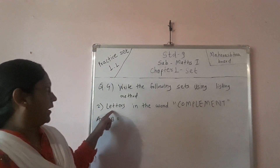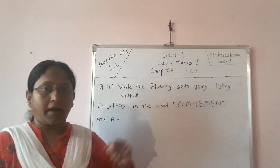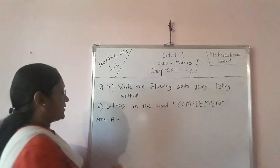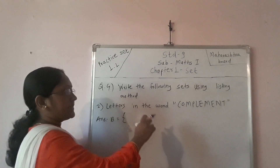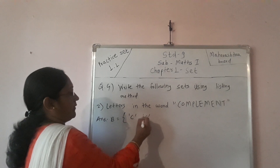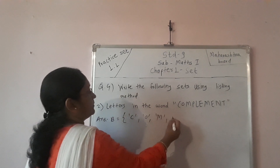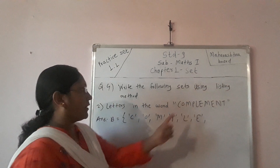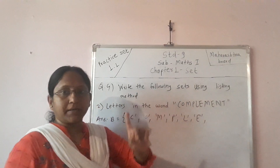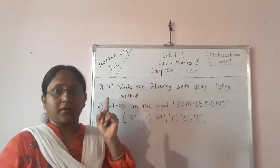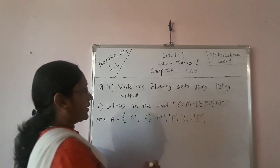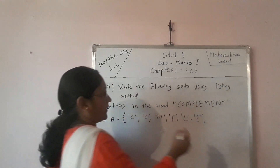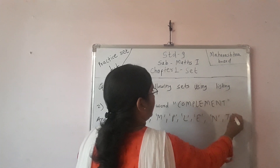Next sub-question: letters in the word 'complement'. I declare that set as B. B equals the letters in the word complement: C, O, M, P, L, E, T. Then M came again — but repeated elements in the listing method are taken only once. So M is not written again. E also came repeated, so that is also not written again. Then N and T complete the set.